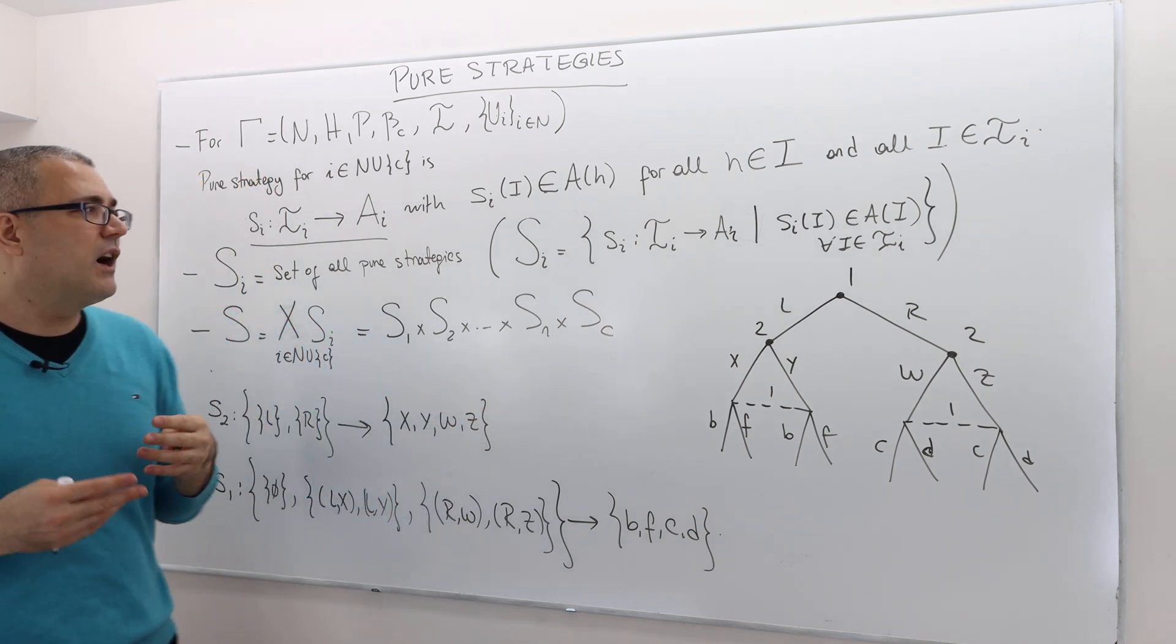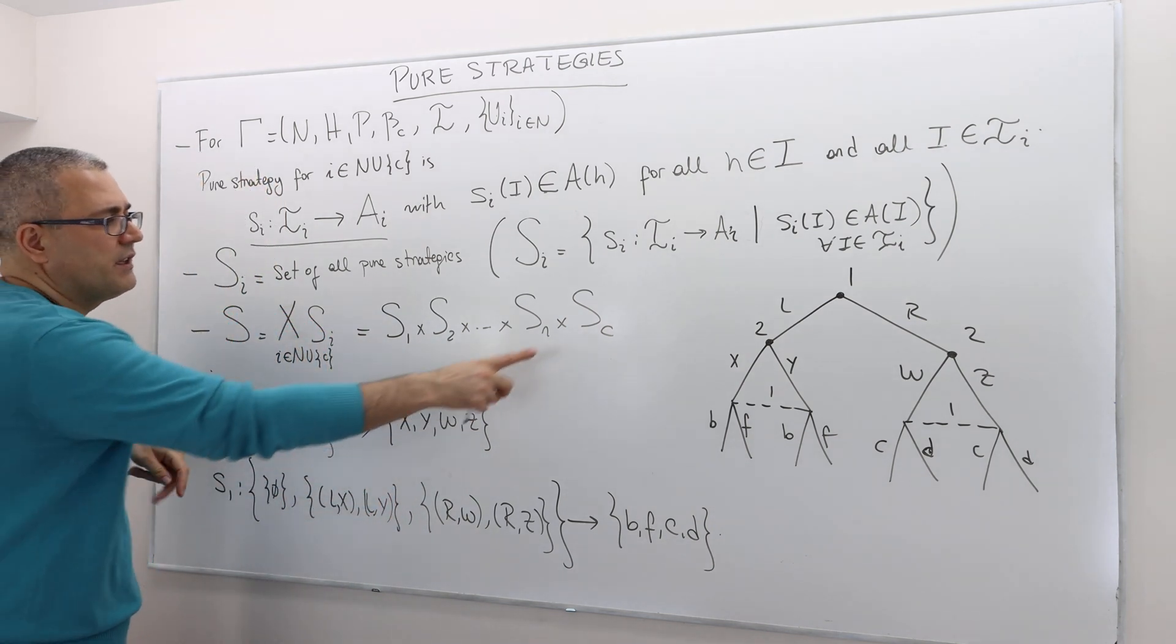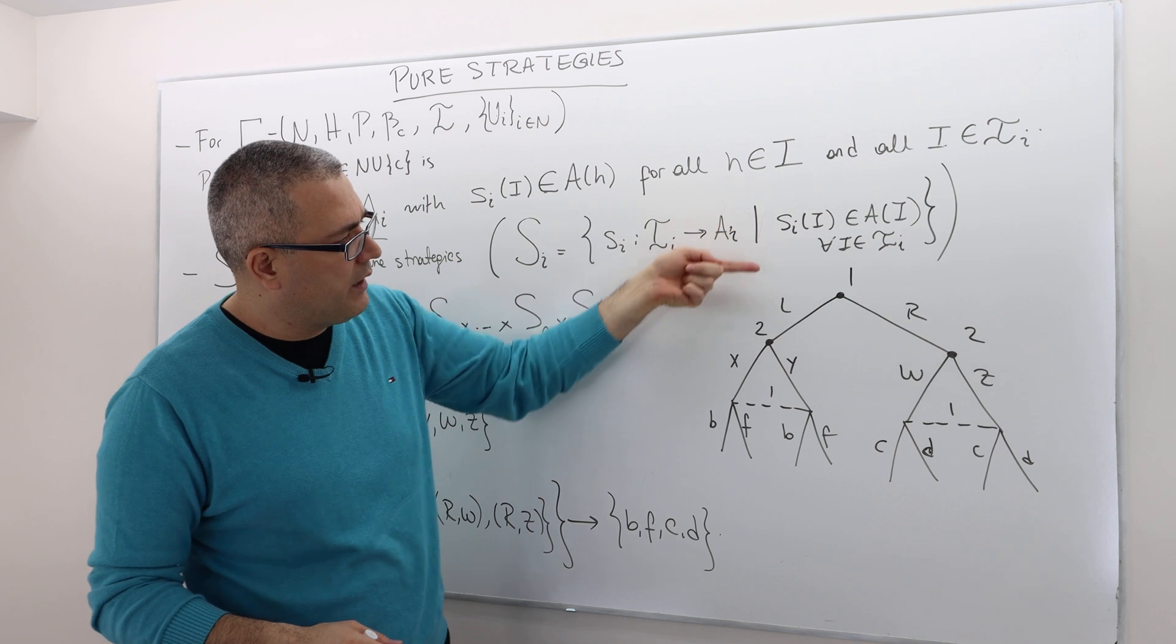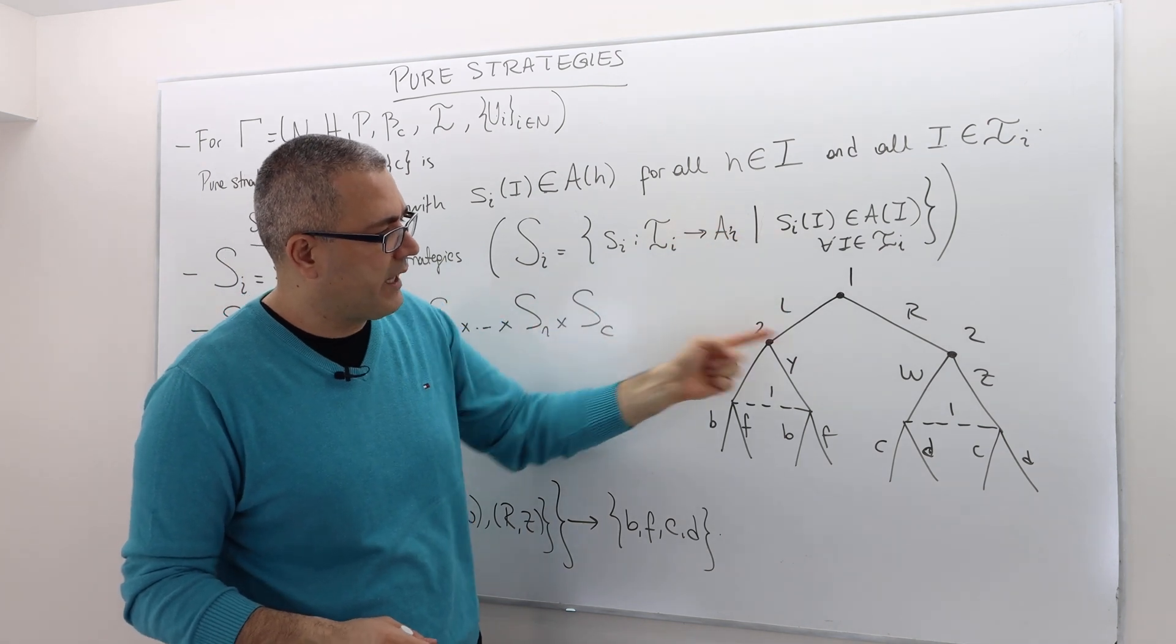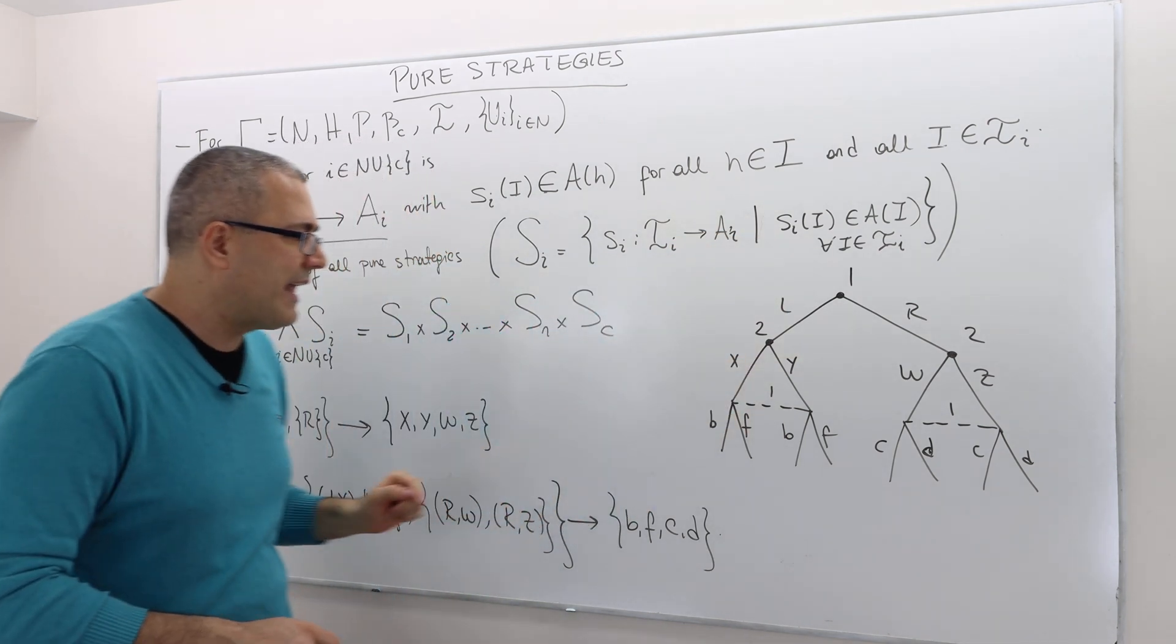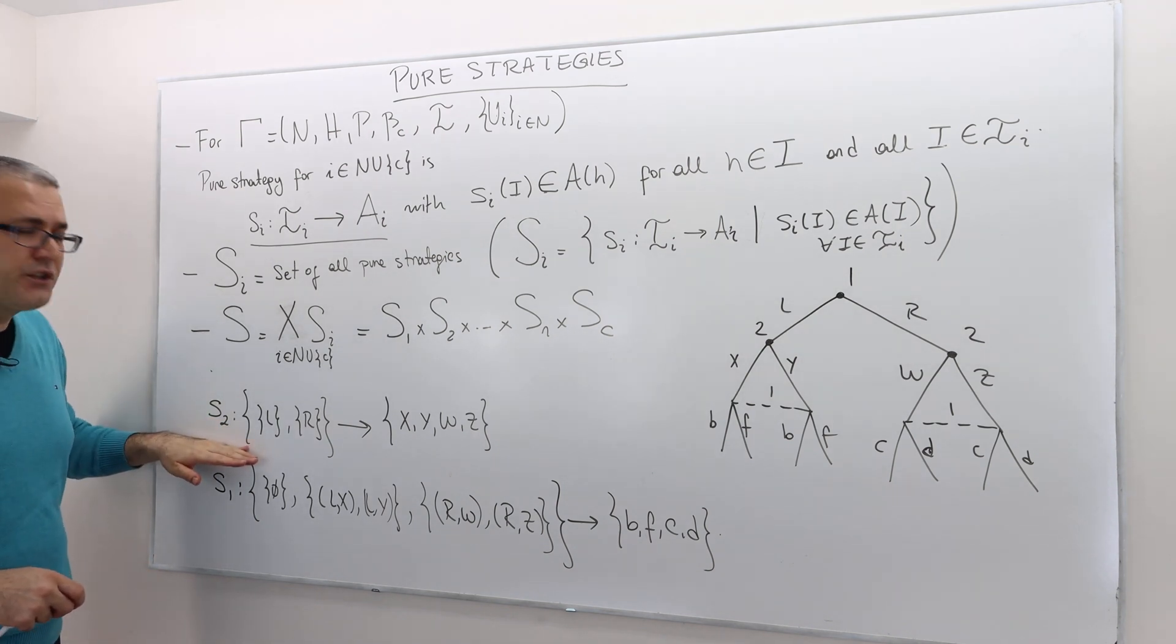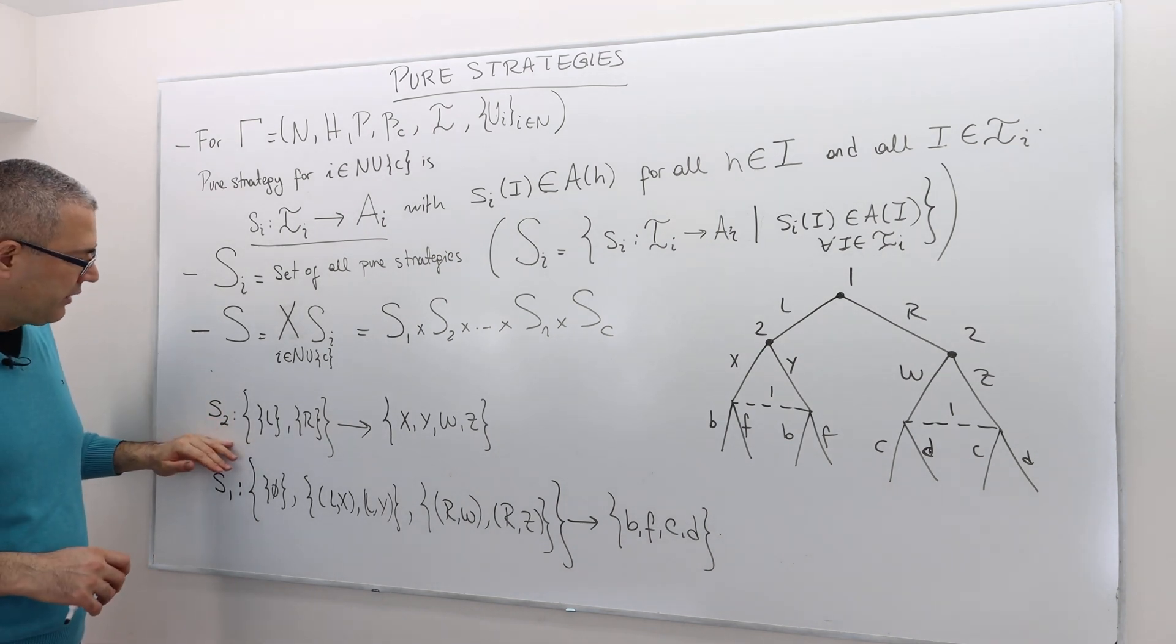So once again, let's go back to the example we talked about. Player one moves first, then player two, and then player one again. Well, in this game, what is a strategy going to look like for player two? Because it's easier. So I start with player two.